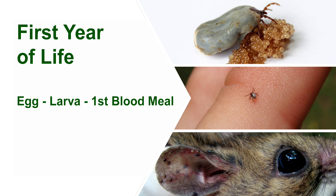Adult female ticks lay eggs on the ground in the spring. Adult females may carry Lyme disease, but their eggs do not. The eggs hatch into larvae during early summer and become infected with disease as they feed on infected mice.